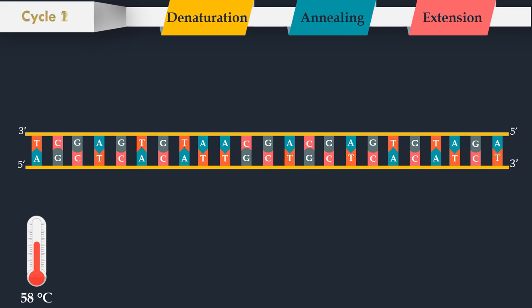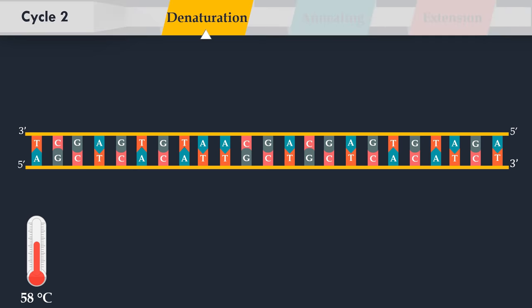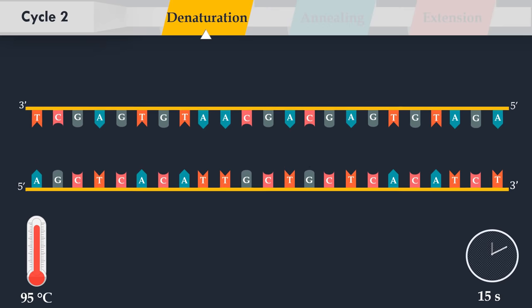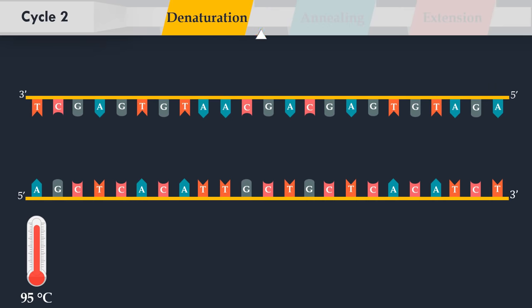After the first cycle, the double-stranded DNA target is obtained. Then, the denaturation of this double-stranded DNA is performed, yielding two single-stranded DNA molecules.